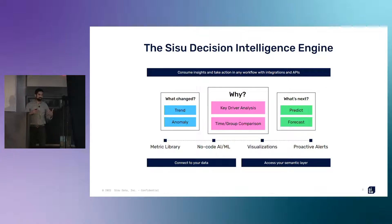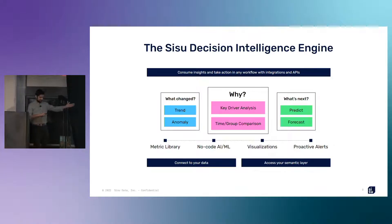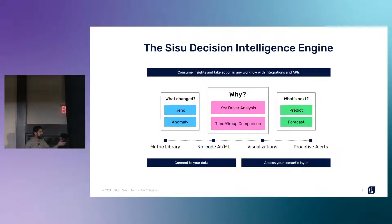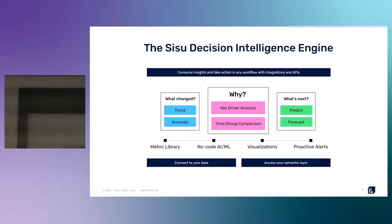So how does this work in a more technical way? Sisu sits on top of your cloud data warehouse — Snowflake, BigQuery, Databricks. If it's a cloud data warehouse, we probably support it. You point Sisu to those tables and data sets. You can then define the metrics in Sisu if you need, or if you have a semantic layer like DBT's, we also integrate with DBT to pull that information from it. After that, you can in a no-code way do all these types of analyses and drive toward making decisions, and consume insights and take action in any workflow through the UI, integrations with third-party products, or APIs.